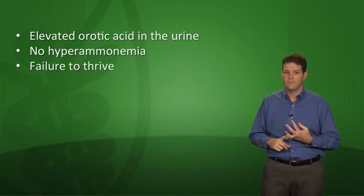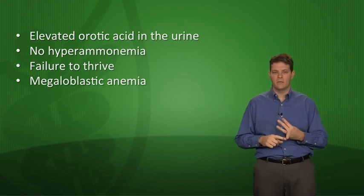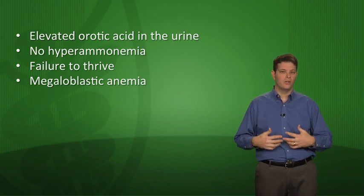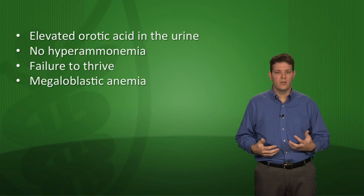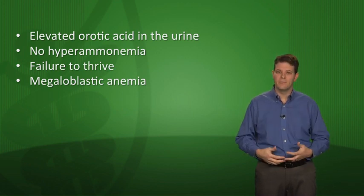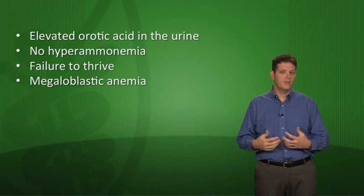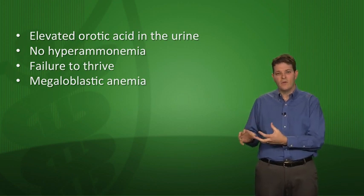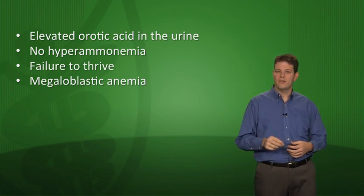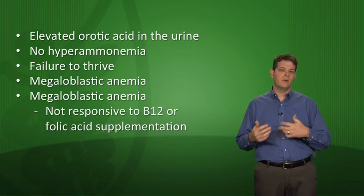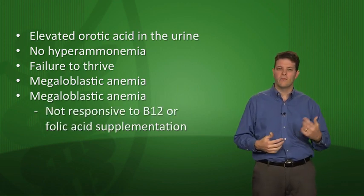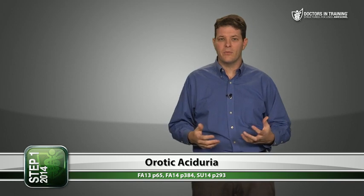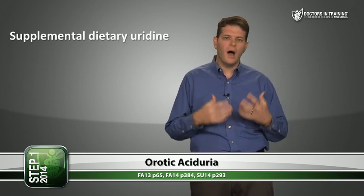Orotic aciduria also causes failure to thrive and megaloblastic anemia — patients can't make UMP or pyrimidines, which is a problem for rapidly dividing hematopoietic cells. This is an unusual cause of megaloblastic anemia because most of the time it's due to B12 or folate deficiency. The anemia in orotic aciduria is not responsive to B12 or folic acid supplementation.